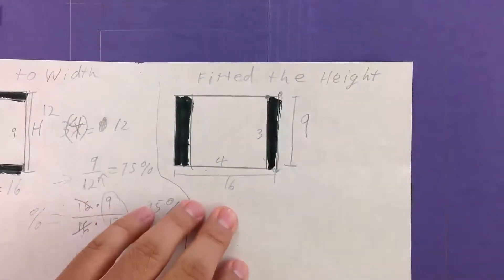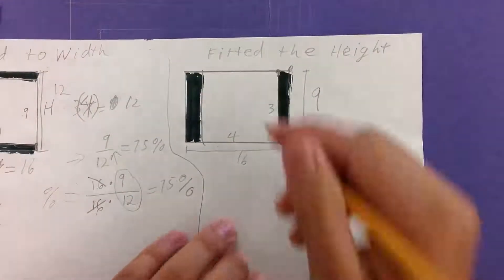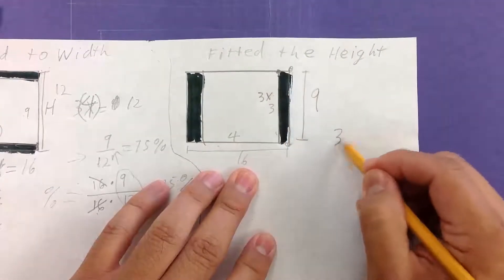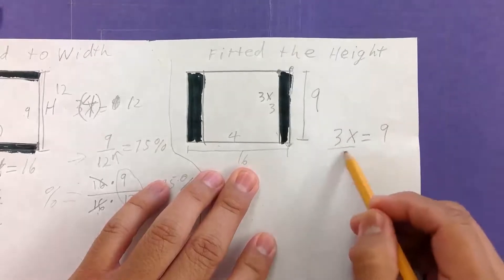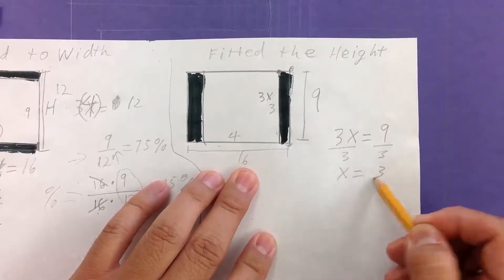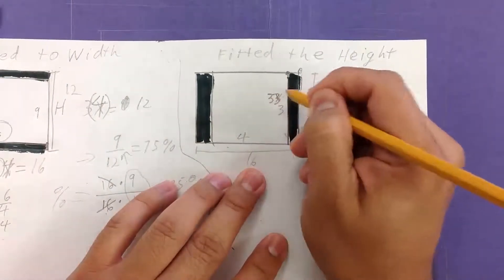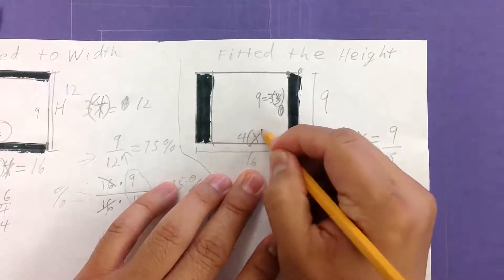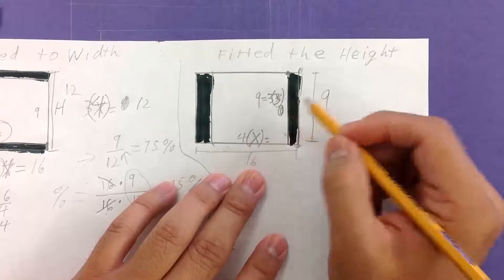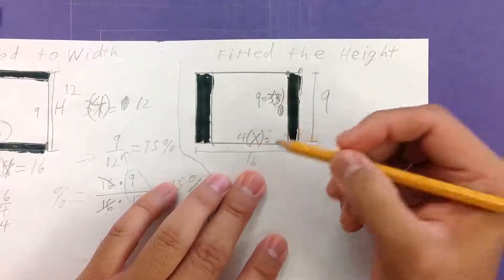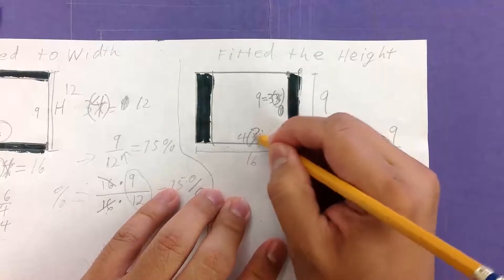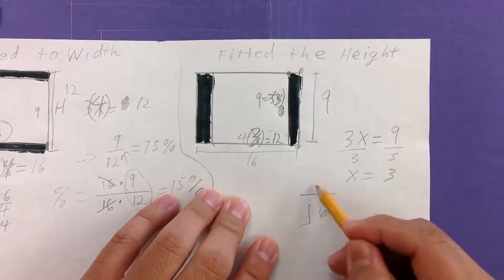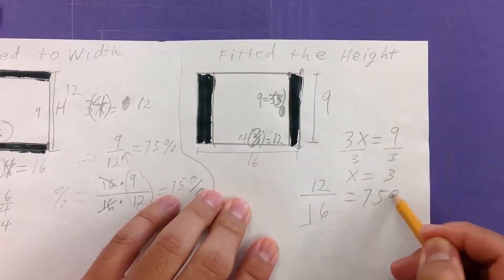Then we just do our magic work. Since it's fitted, we have to have 3x equal to 9. Divide both sides by 3. X is equal to 3. So that means I multiply this part by 3, that gives me 9. And I multiply this also by 3, because that's scale factor. We're scaling it. So this image is similar to the original print. This is also 3, so 12. And so we end up with 12 divided by 16, which happens to be also 75%.